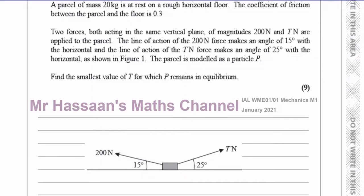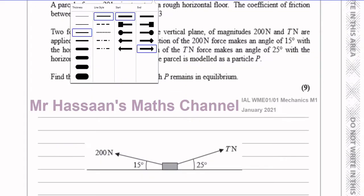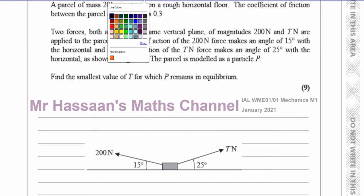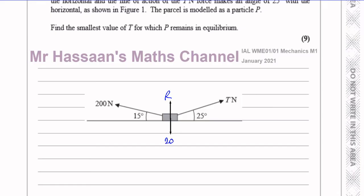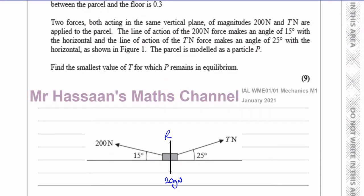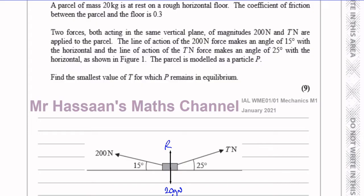We know that certain forces act on this particle. There's the weight, which is 20g newtons — 20 kilograms so 20g newtons, where g is the acceleration due to gravity, 9.8 m/s². You also have the reaction force acting perpendicular to the surface, so the reaction force acts vertically upwards. And there's another force acting as well, which is basically the friction.